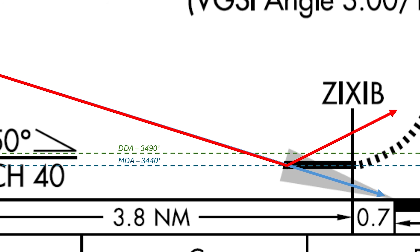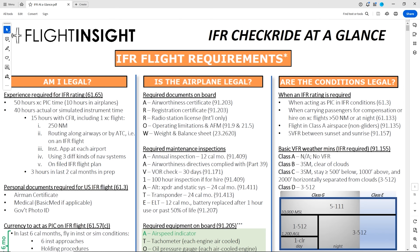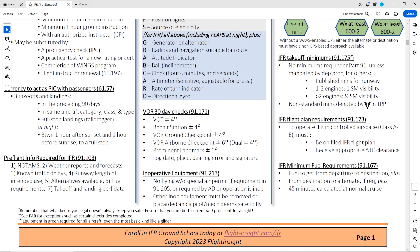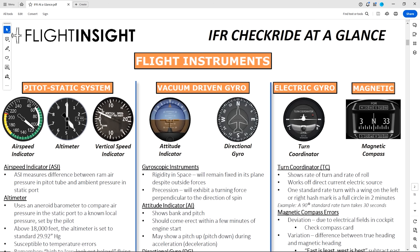Whatever you do, make it part of your own SOP and thoroughly brief it prior to flying. If you want a free resource to help you ace your instrument checkride, Flight Insight has a 15-page PDF guide that's linked here and in the description.